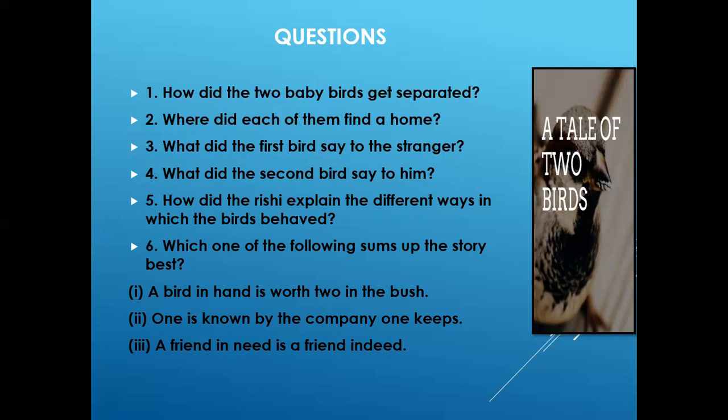So the question is how did the two baby birds get separated? You can condense this and write that one day there was a big storm and lots of trees fell down, including the tree in which the baby birds' nest was. The strong wind blew them away to the other side of the forest. One of the birds landed near the cave and another one landed near Rishi's ashram. Hence, they got separated.